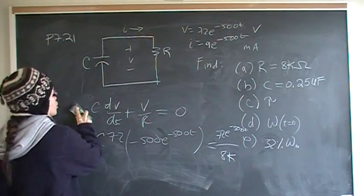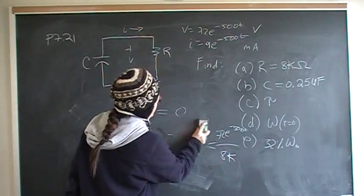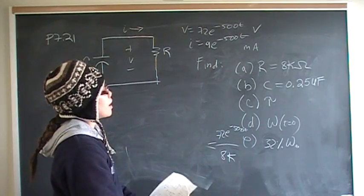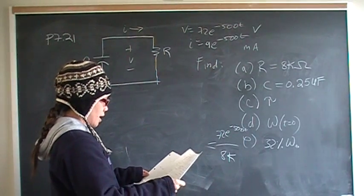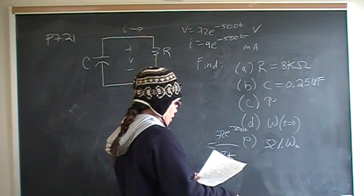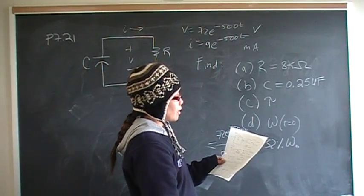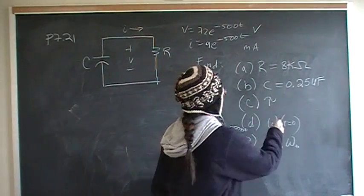Now tau is just RC. Send me your answer from part A multiplied by your answer from part C. And that should come out to be 8 kilo-ohms times 0.25 microfarads is 2 milliseconds.